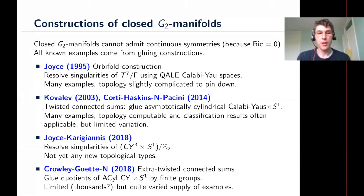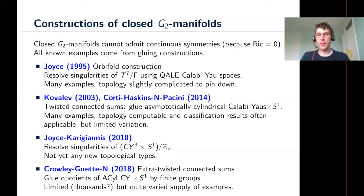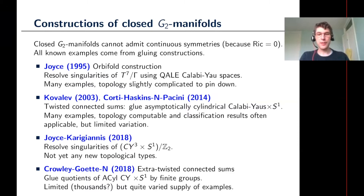Later, in the early 2000s, Alexei Kovalev implemented the twisted connected sum construction. You cook up some asymptotically cylindrical Calabi–Yau threefolds with holonomy SU(3), take two of those, multiply them by circles, and glue them together to construct a closed G2 manifold. This gives a lot of examples and one can understand a lot more about the topology from those — you know enough about the complex algebraic objects you start with to figure out a lot about the topology of the resulting G2 manifold. The only problem is that a lot of those manifolds kind of look the same, so it's not so easy to use them to exhibit interesting phenomena.